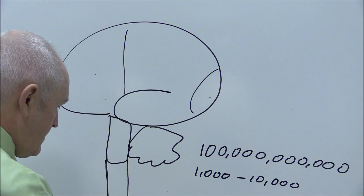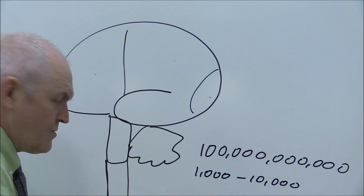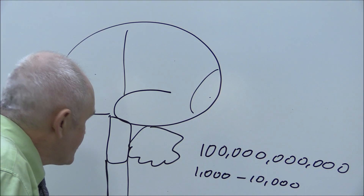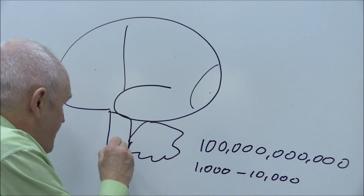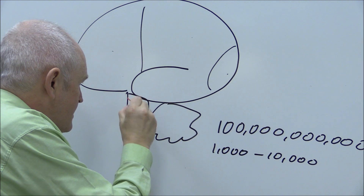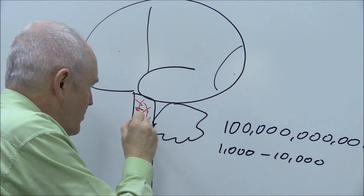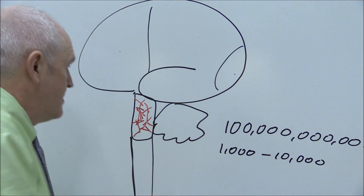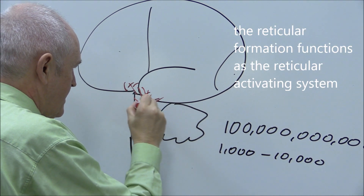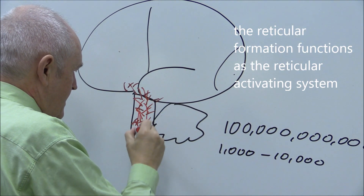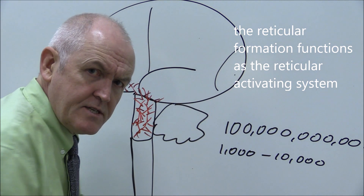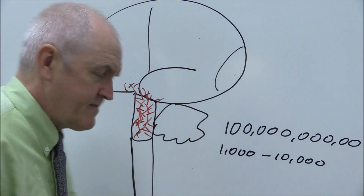While we don't know exactly what's going on here, it is true that throughout the brainstem there's a large interconnected network of very small nerve fibers. It goes slightly into the base of the brain as well, and these nerve fibers are called the reticular activating system.